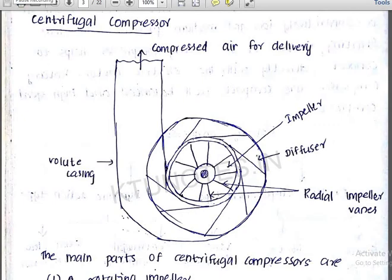Let's start the 6th module. We have two parts: Centrifugal Compressor and Axial Compressor. We have different types of pump and different types of compressor. I'll start with some basic things.